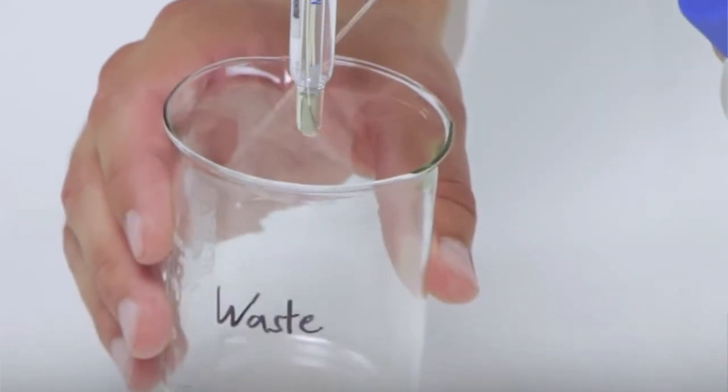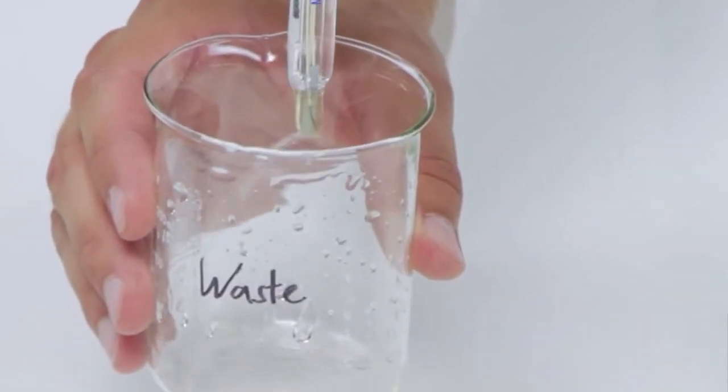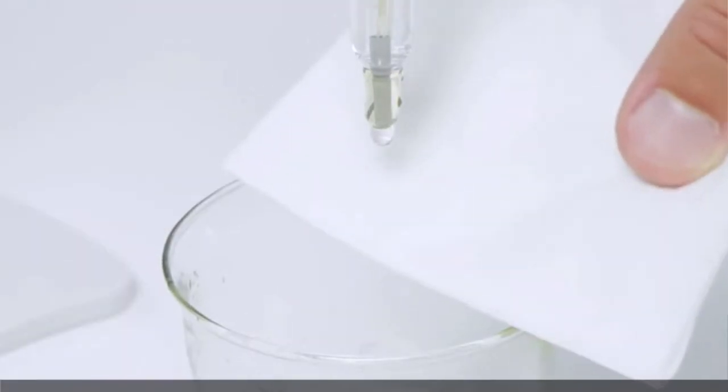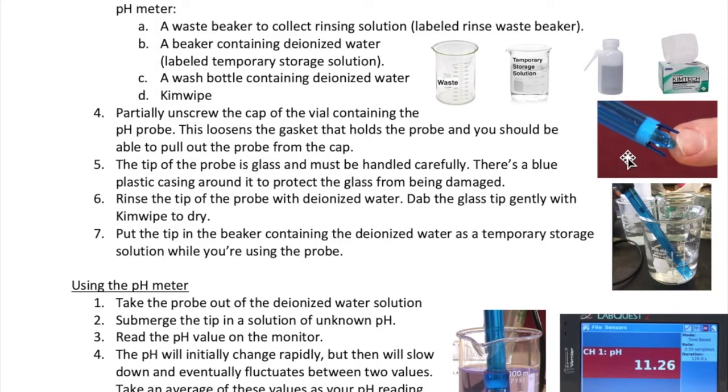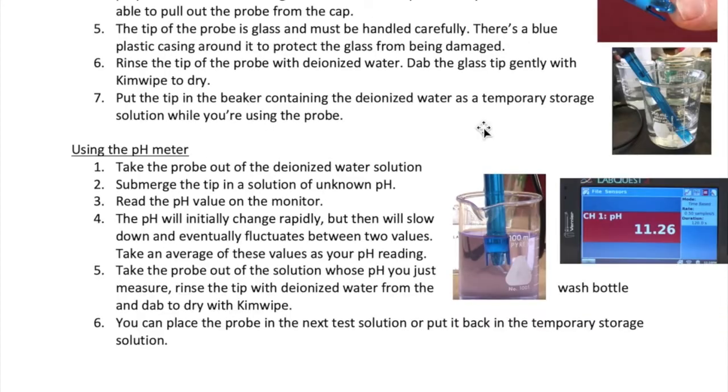Rinse the tip with deionized water from the wash bottle. And then, dab the glass gently with a clean sheet of kim wipe. Place the tip inside the beaker with the deionized water. Your pH meter is now ready to use.